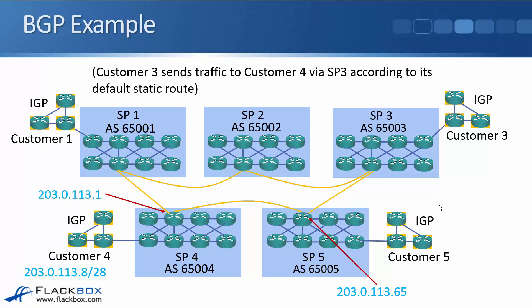Looking at the end-to-end flow: customer 3 has a default static route pointing to SP3. Traffic destined for 203.0.113.9 goes from customer 3 to SP3, which uses its BGP route with next hop 203.0.113.65 at AS65005. SP5 then forwards it to 203.0.113.1 at AS65004, and SP4 — which allocated that public IP to the customer — delivers it.